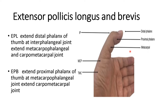Extensor pollicis longus extends the distal phalanx of the thumb at the interphalangeal joint, and also extends the metacarpophalangeal and carpometacarpal joints. Extensor pollicis brevis extends the proximal phalanx of the thumb at the metacarpophalangeal joint and extends the carpometacarpal joint.